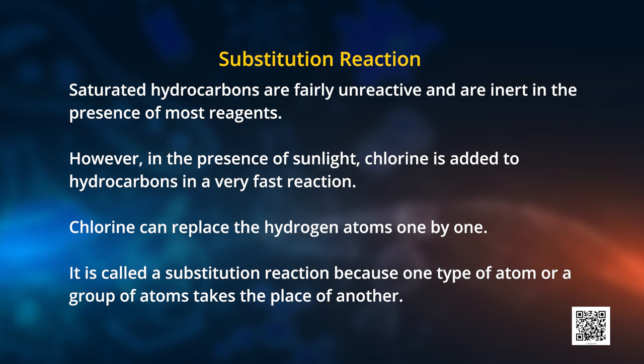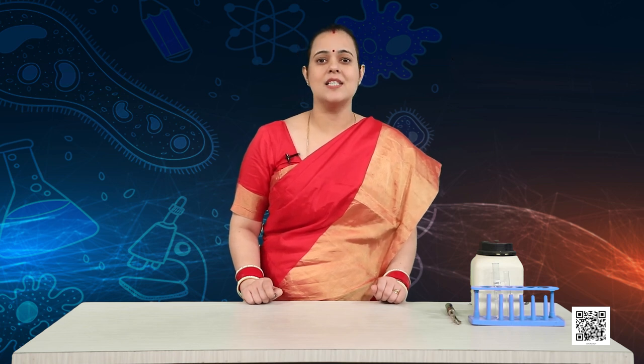Saturated hydrocarbons are fairly unreactive and are inert in the presence of most reagents. However, in the presence of sunlight, chlorine is added to a hydrocarbon and it is a very fast reaction. Chlorine can replace the hydrogen atom one by one. It is called a substitution reaction because one type of atom or group of atoms takes the place of another. It happens in saturated hydrocarbons.